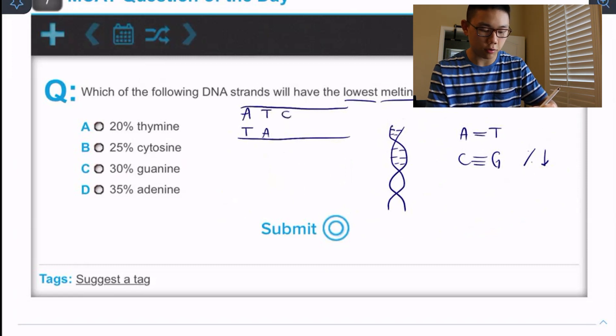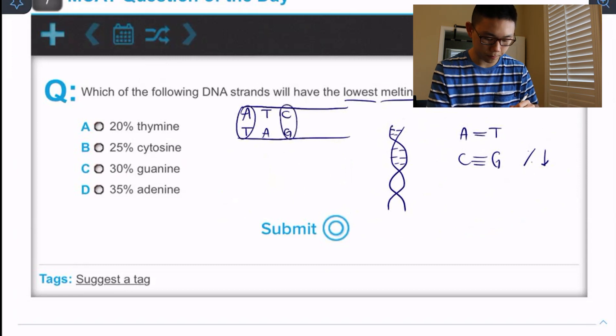And for every C nucleotide on one strand, there's going to be a G nucleotide on the other strand. So A and T have a one to one ratio correspondence and C and G do as well. Awesome. So we know this stuff.